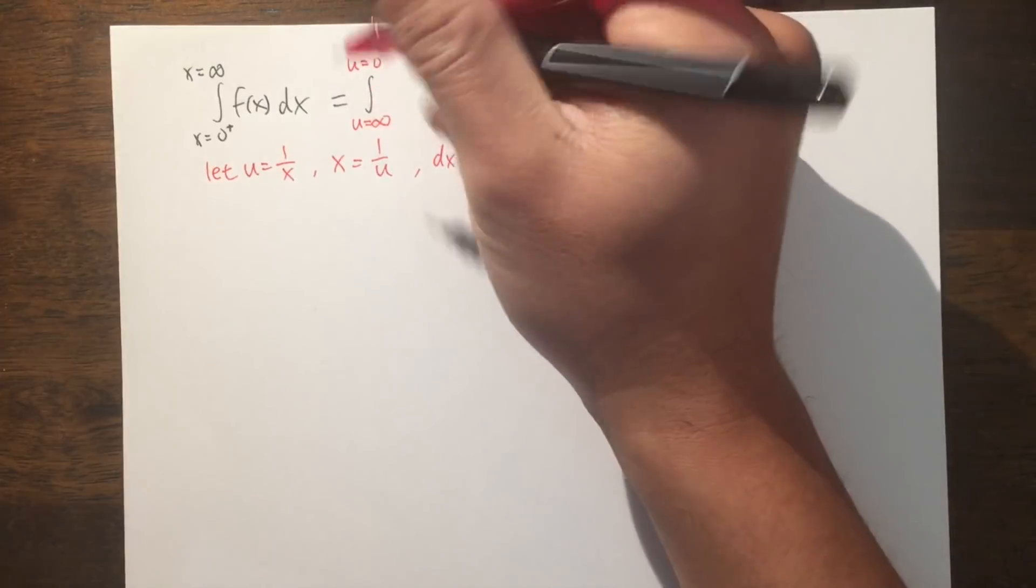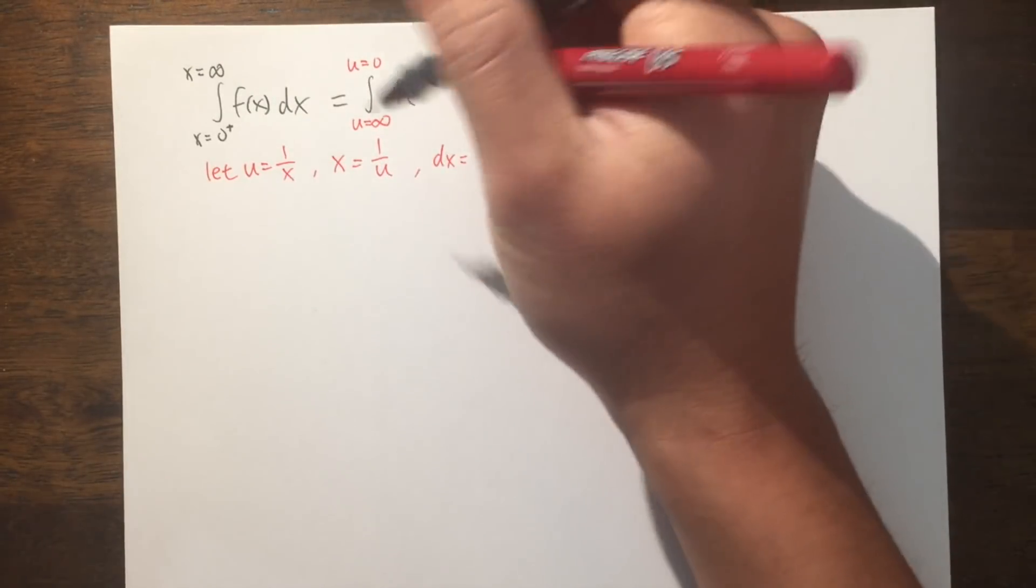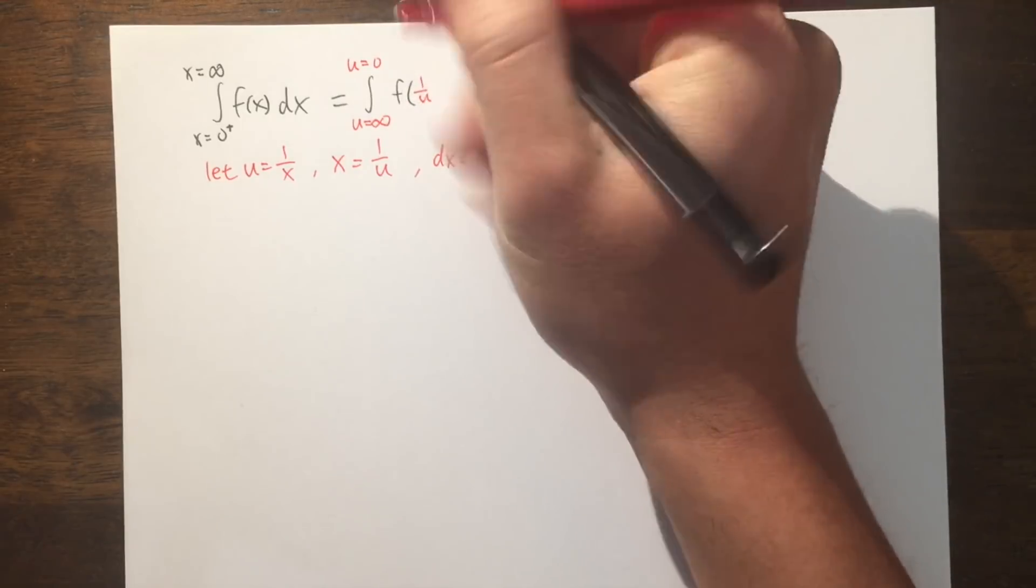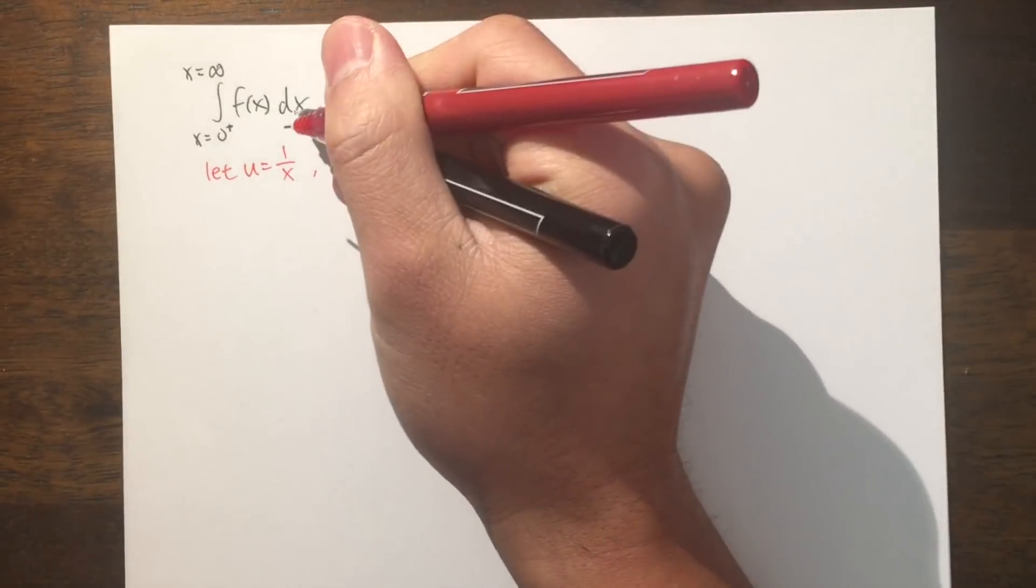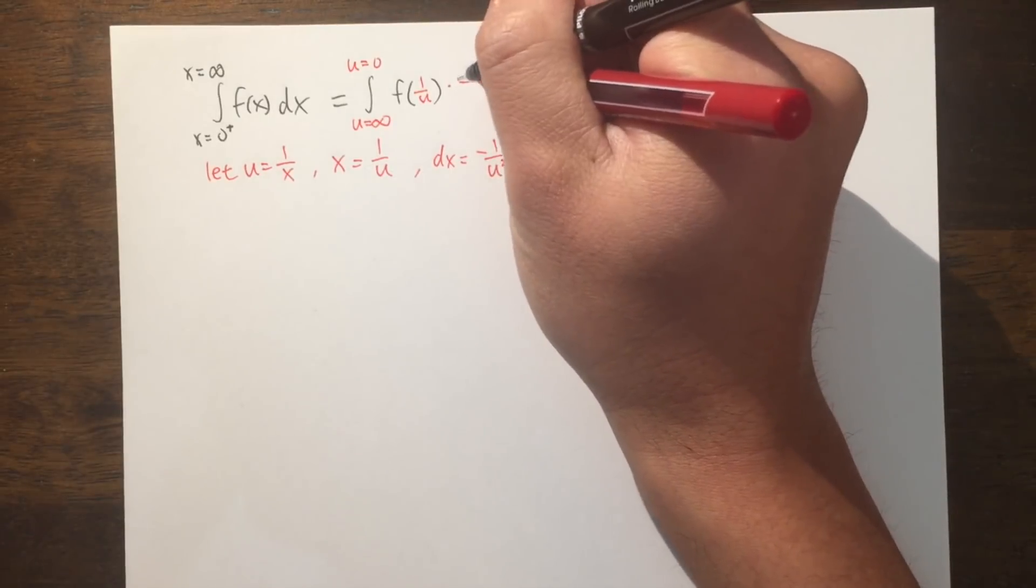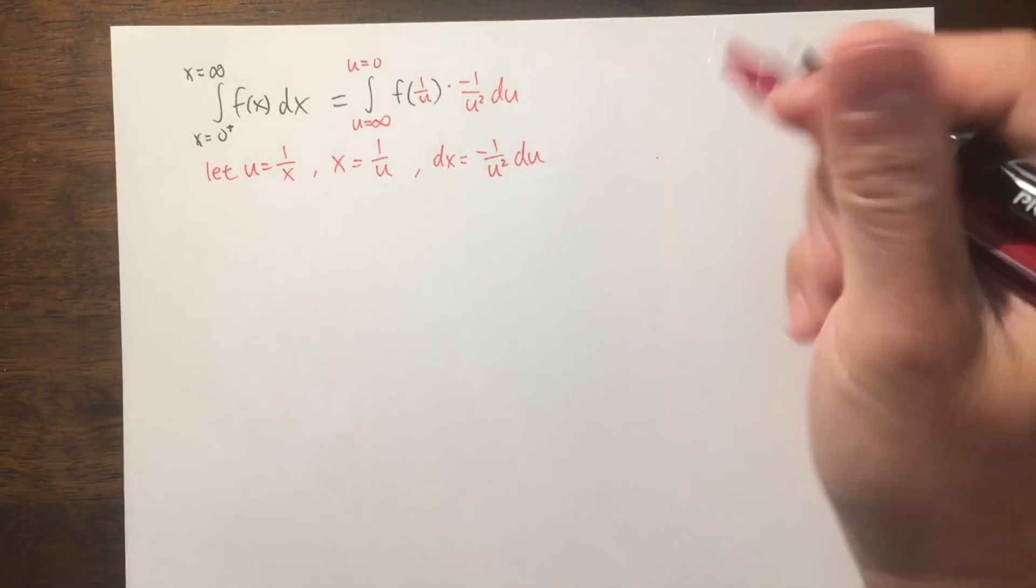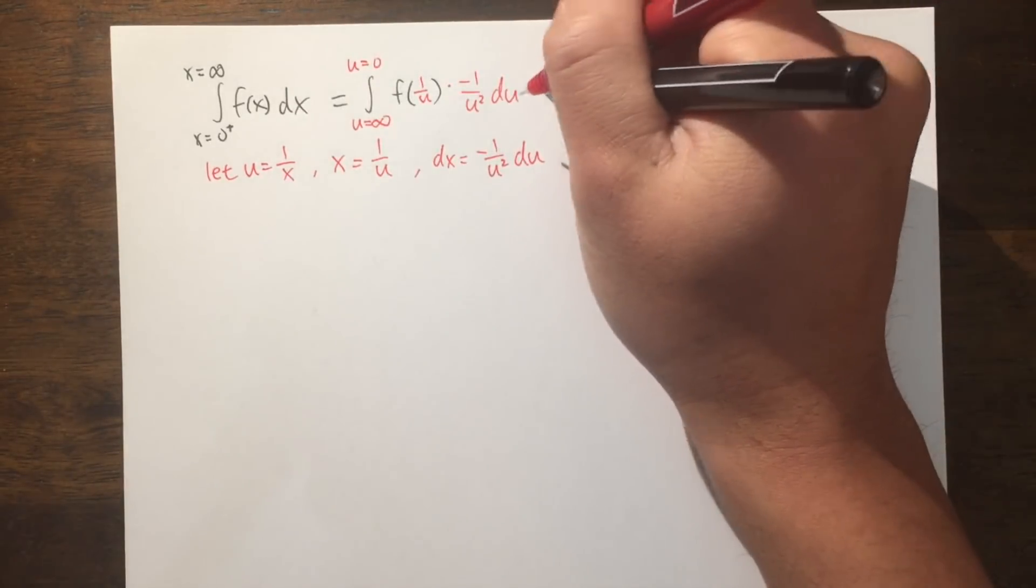Inside here, we have f(x). The x is now 1 over u, so we have f(1/u). The dx is that, so we multiply this by negative 1 over u squared du. And then of course, we can clean things up a little bit.